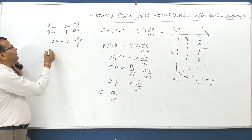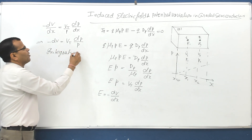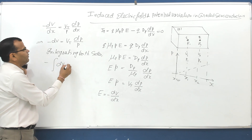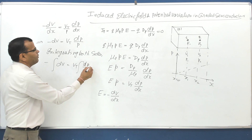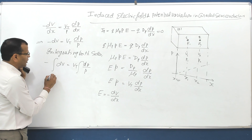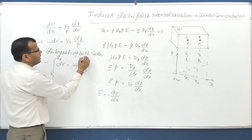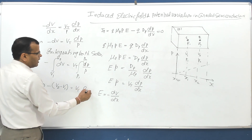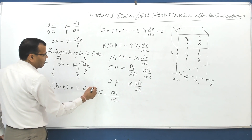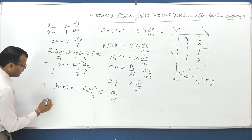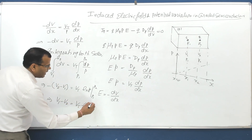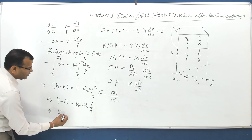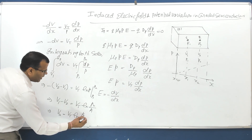Integrating both sides: minus integral of dV equals VT times integral of dP/P. With voltage V1 and V2 at the two ends, and concentrations P1 and P2, this gives: minus (V2 − V1) = VT·ln(P2/P1), or V1 − V2 = VT·ln(P2/P1). Therefore, V12 = VT·ln(P2/P1). This is an important expression.